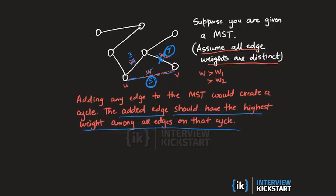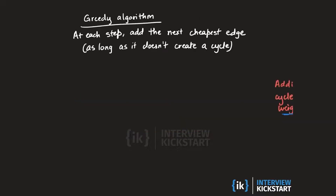A natural algorithm that might come to mind is to construct the spanning tree by starting from the lowest cost edge and then adding each edge in increasing order of cost or weight. I'll call this a greedy algorithm, because in each step we try to add the next cheapest edge to this growing subset of edges. As long as adding this next cheapest edge is not going to create a cycle we add it; otherwise if it creates a cycle we don't add it and move on to the next cheapest edge.